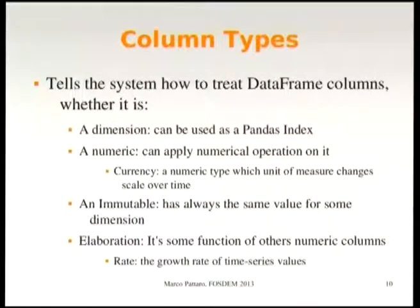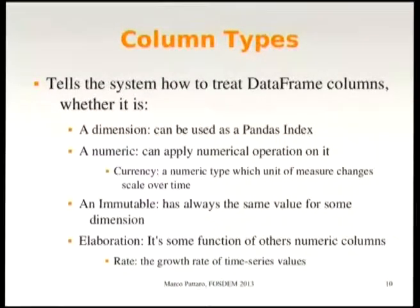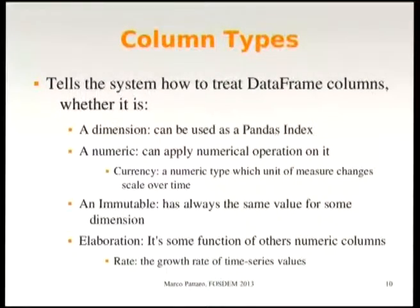This metadata is basically built with Python dictionaries. In this dictionary, I describe the type of columns: dimensions, which can be used as Python indexes — but the user doesn't know anything about this, so the system just defines the indexes when it's the right time. Then there are numeric columns, and immutable values, which are labels or other values that are always the same for a specific dimension.